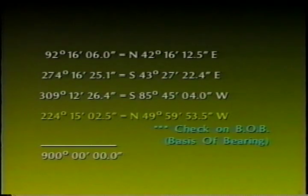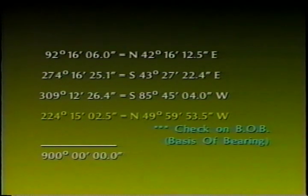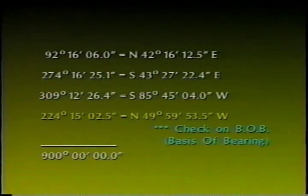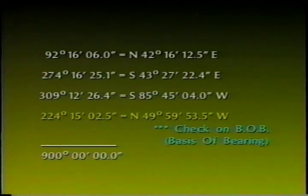Once the angles have been adjusted, it is possible to compute the bearings of the traverse lines. In the following example, we have created a table of the adjusted angles and bearings. The initial backside bearing from point one to point 11 was north 49 degrees, 59 minutes, 53.5 seconds west. We see the adjusted angles and subsequent bearings, and that the adjusted angles of our traverse mathematically close back on the basis of bearings.